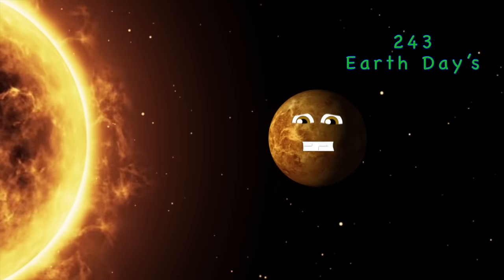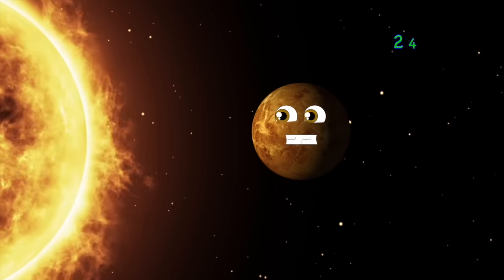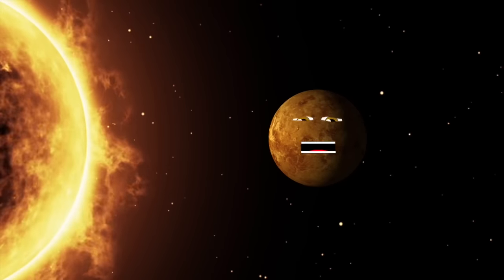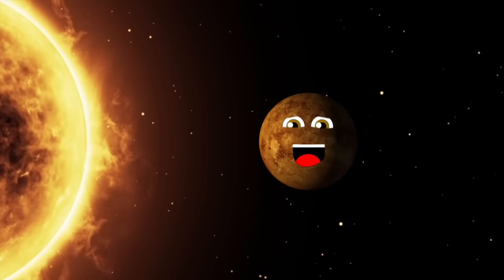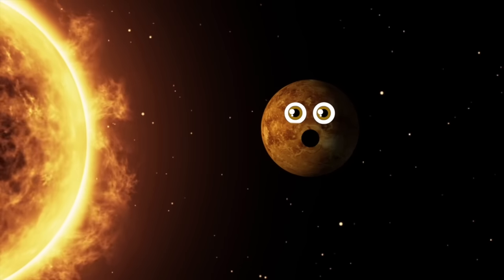243 earth days is how long it takes for me to orbit the sun. That makes just one of my days. I'm 900 degrees, yeah that's Fahrenheit. I'm the hottest planet in the solar system, that's right.